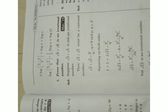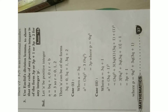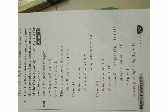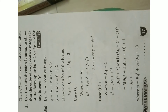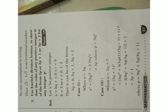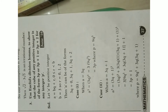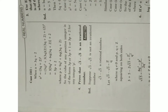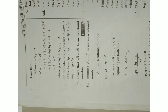One more important question: use Euclid's division lemma to show that the cube of any positive integer is of the form 3p, 3p+1, or 3p+2. This is also a most important question. You can see the solution with all three cases covered.